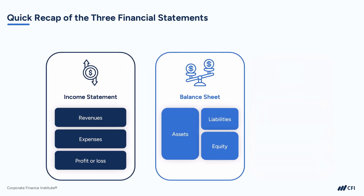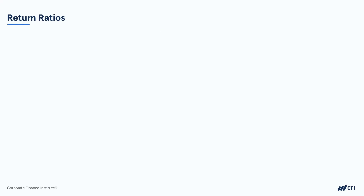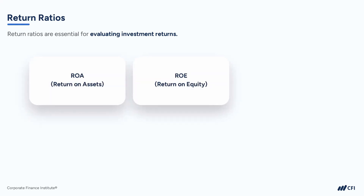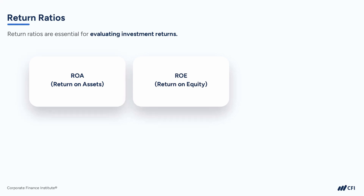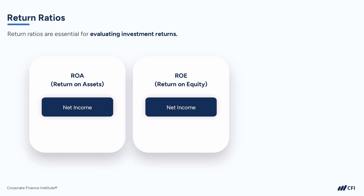We're starting with return ratios, and for return ratios we're going to need both the income statement and the balance sheet, while for profitability ratios we only need the income statement. Return ratios are essential in evaluating investment returns. Two widely used ratios are return on assets (ROA) and return on equity (ROE). For each of these ratios, we compare the bottom line profit from the income statement — known as net income, net earnings, or net profit, all synonyms for the same thing.